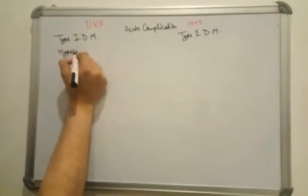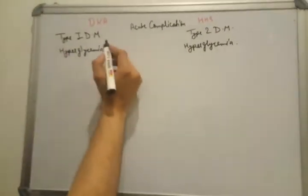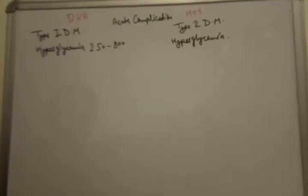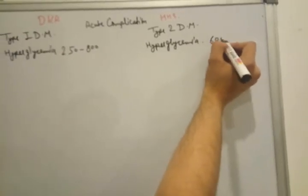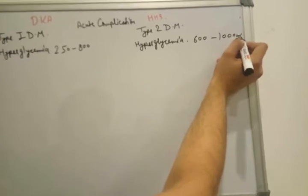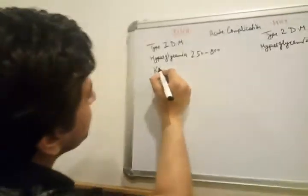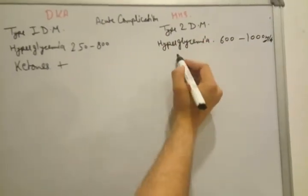In both conditions there is hyperglycemia. In DKA, hyperglycemia ranges from about 250 to 800 mg/dL. In HHS, hyperglycemia must be 600 to 1000 mg/dL — a much higher range. Regarding ketones: in DKA, ketones are present (ketonuria), but in HHS, ketones may be present or absent — we generally consider HHS as non-ketotic.